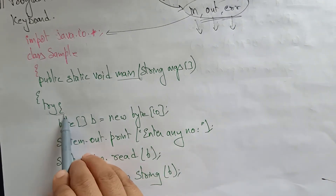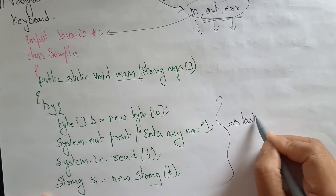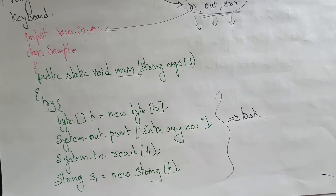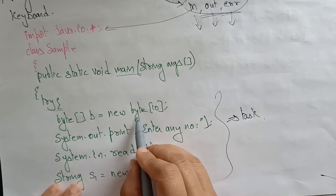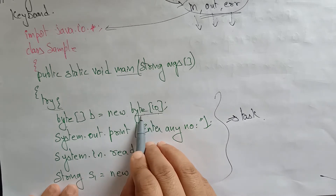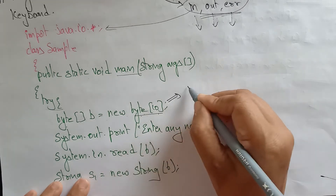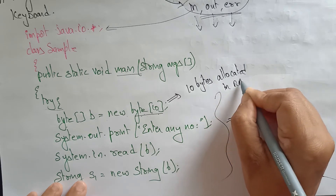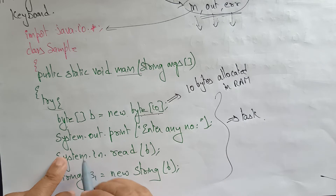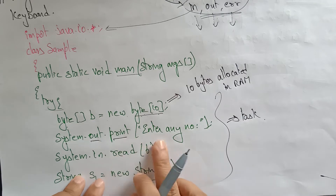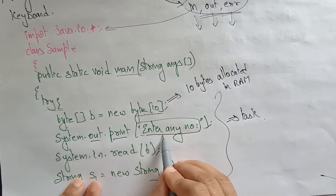In the main method, first is the try block. I am using the try block to write the task of my program. My aim here is: I am entering data through the keyboard, and that data has to be printed on the command prompt. I am taking a byte — byte b equal to new byte[10]. A byte object is created, so it is going to allocate 10 bytes in RAM. Now I am calling system.out.print — this message is going to display on the command prompt: 'Enter any number.' The cursor will stay on the same line because I used print, not println.